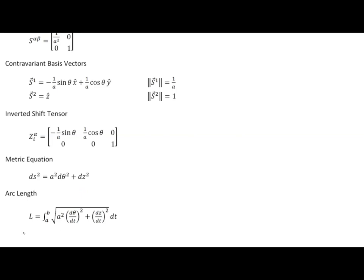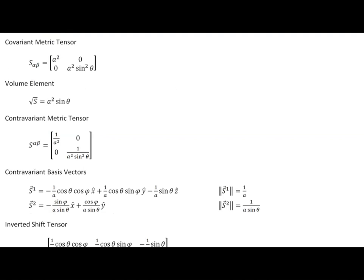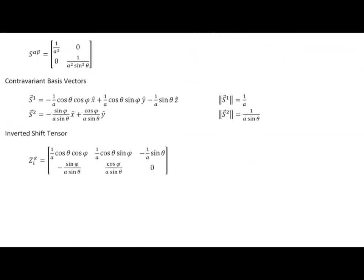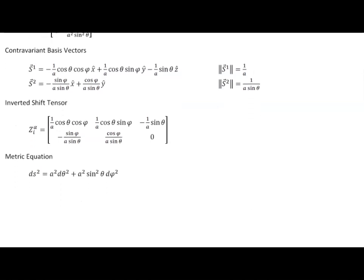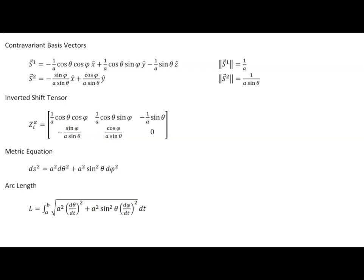Moving on to the spherical surface — equally trivial. Walking through the non-zero elements of the covariant metric tensor: first, a-squared multiplied by dz^1 squared, which is d-theta squared. The only other term is a-squared sine-squared-theta times dz^2 squared, which is d-phi squared. So the metric equation is a-squared d-theta-squared plus a-squared sine-squared-theta d-phi-squared, and the arc length follows directly.